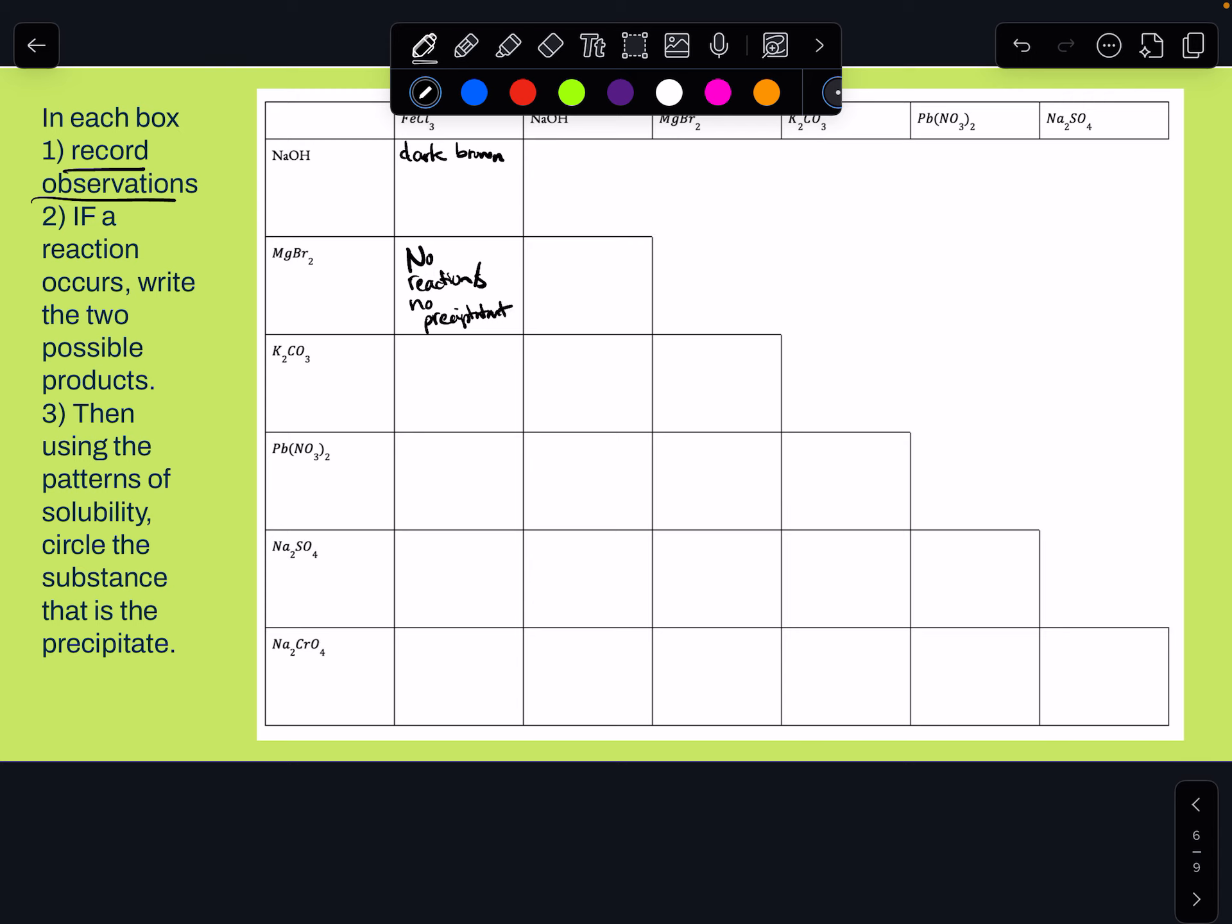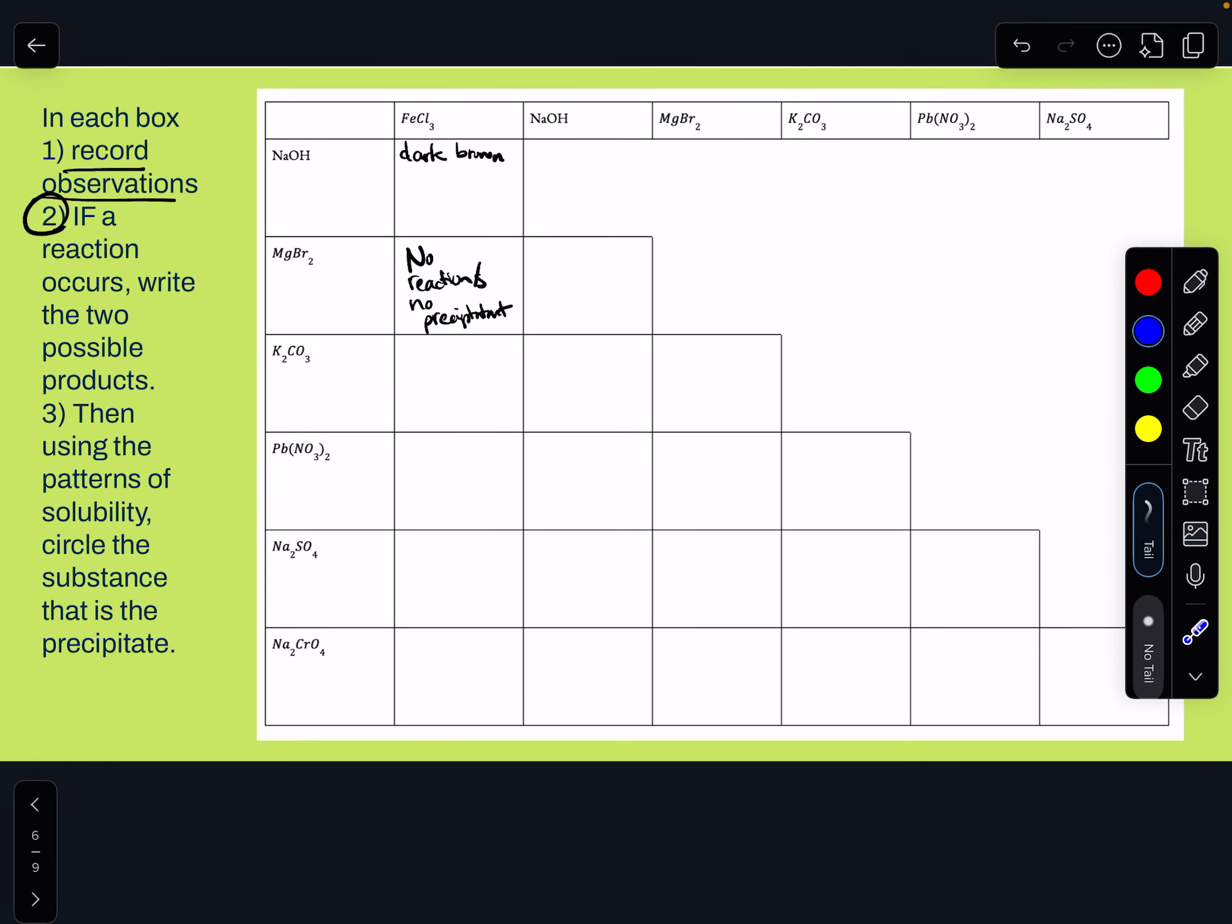For our reactions that did occur, so in this box right here, this one we don't need to do anything else, it's done. But for the ones where a reaction does happen, what we want to do is write the two possible products that could be made from these things mixing, with the end goal of identifying what is the substance, what did we make, what is that dark brown thing I see in the liquid that was created.